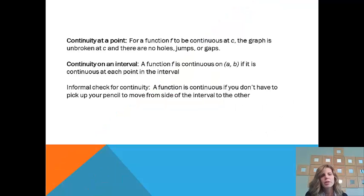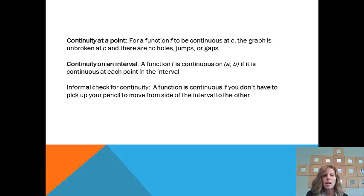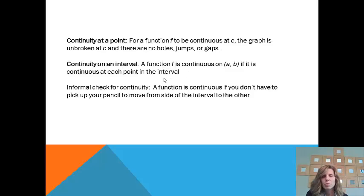Let's go ahead and start out with looking at the definition of continuity. Continuity at a point: for a function f to be continuous at c — some x value of c — the graph is unbroken at c and there are no holes, jumps, or gaps. If a function is continuous on an interval, it is continuous at each point in the interval.